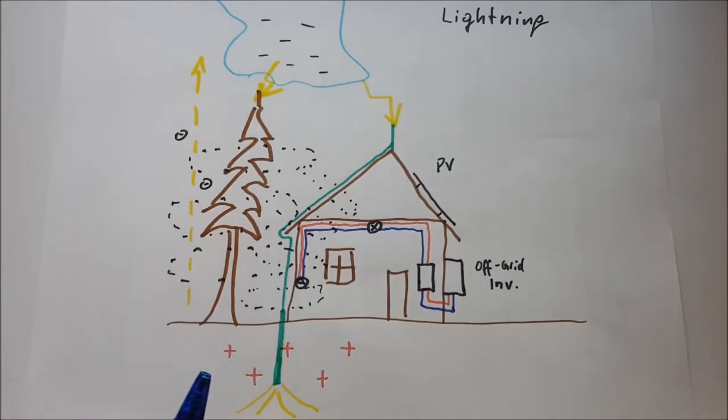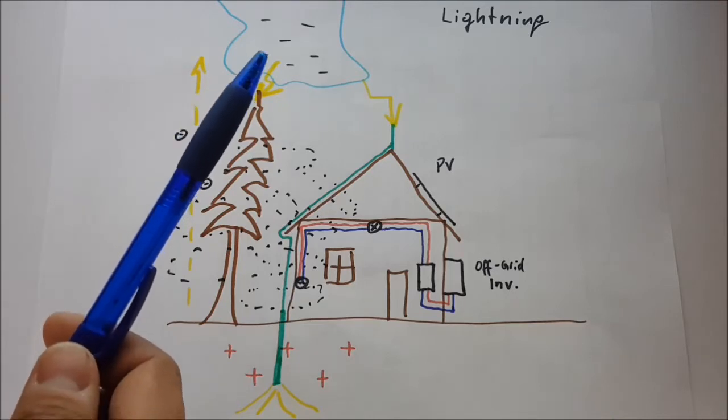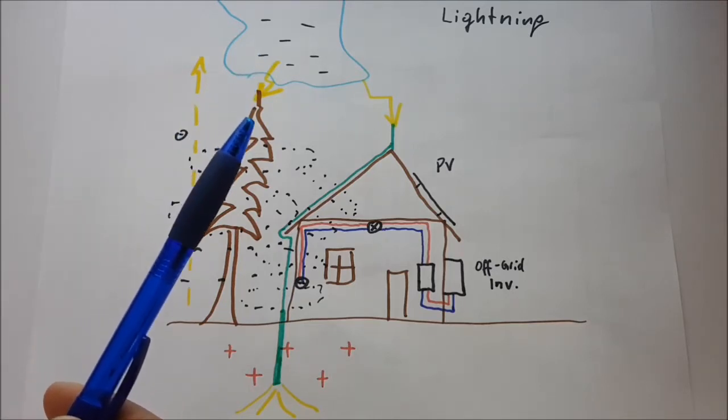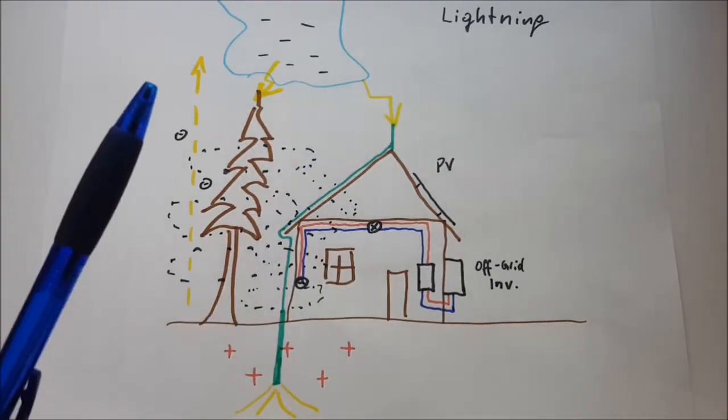When the lightning strikes into the tree, the current is also then going back to earth. In any case, what we are talking about is that current needs to go back to its source where it originated. So lightning can only go back to the earth because earth is the source of the potential.